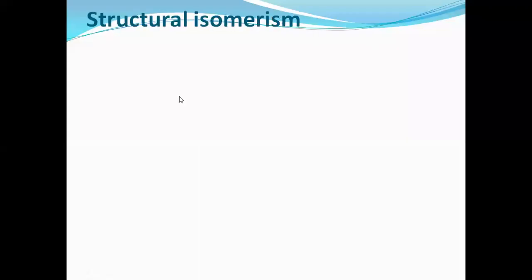Dear students, in this slide we are going to study structural isomerism, that means continuation of the isomerism. In the last class we studied stereoisomerism, which has two parts: optical isomerism as well as geometrical isomerism. We have studied that there are four types of structural isomerism, and we will go one by one.